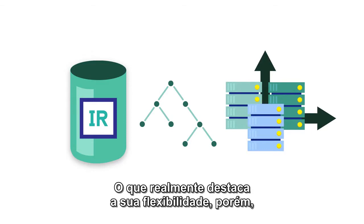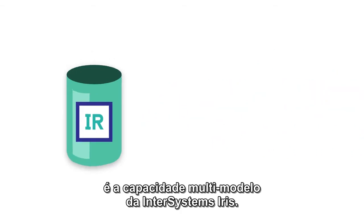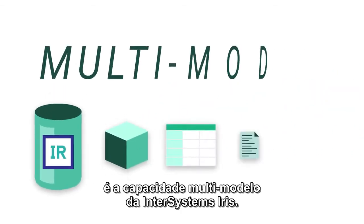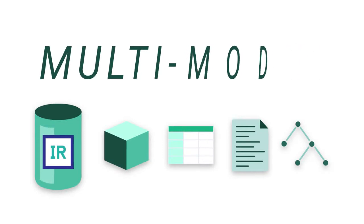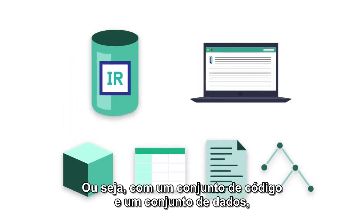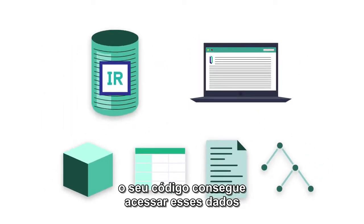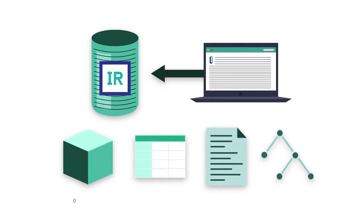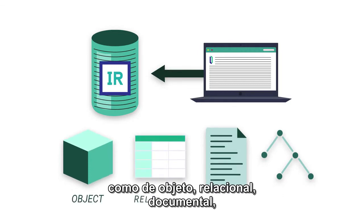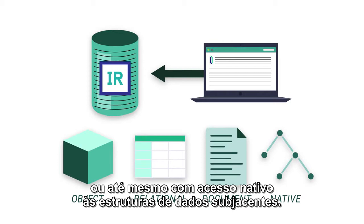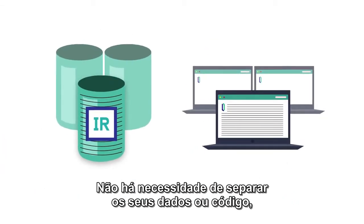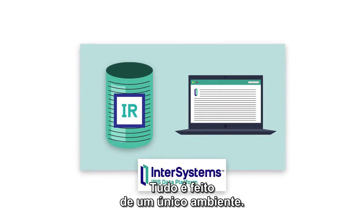What makes its flexibility shine though is InterSystems IRIS's multi-model capability. That is, for a given set of code and a given set of data, your code can access that data as multiple different models, including object, relational, document, or even native access to the underlying data structures. There's no need to separate your data or your code — it can all be done from a single environment.